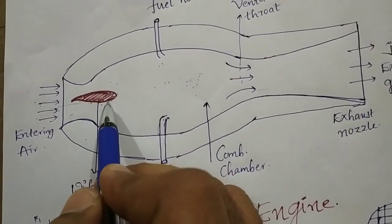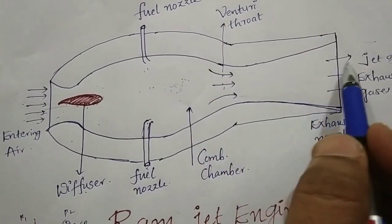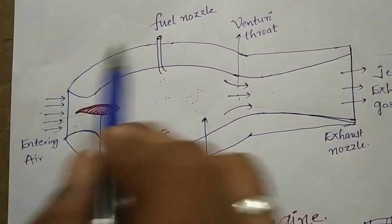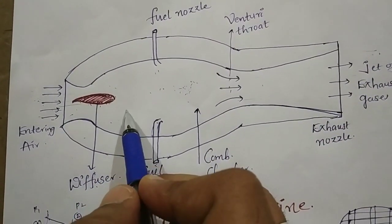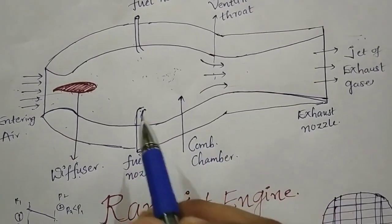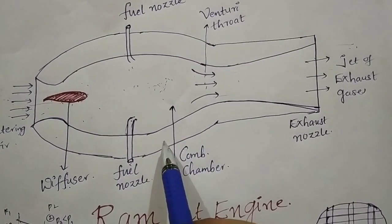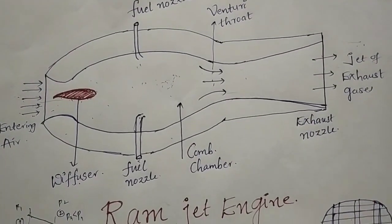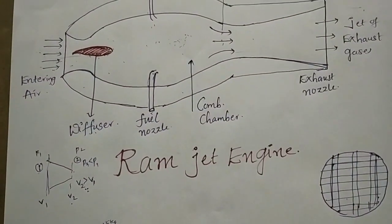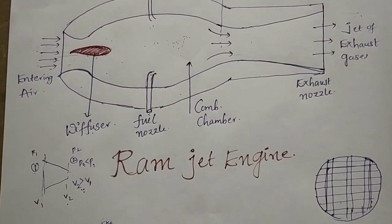High velocity gases are emitted outside. After some time, when the speed of the ramjet and the speed of the exhaust gases become the same, the efficiency decreases. If the ramjet is moving at a very high speed, the efficiency will be lower. Supersonic speed means the speed of an object traveling faster than the speed of sound, which is 343.2 meters per second.